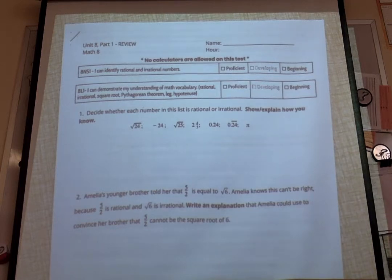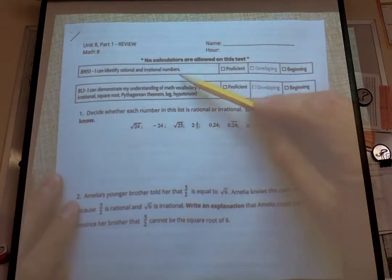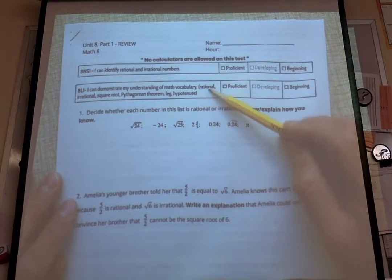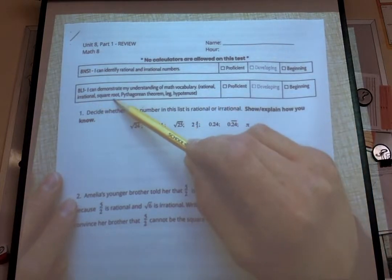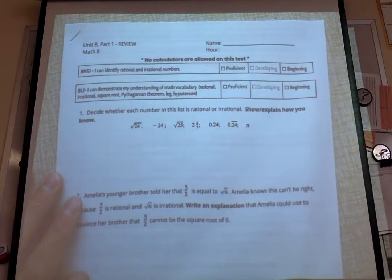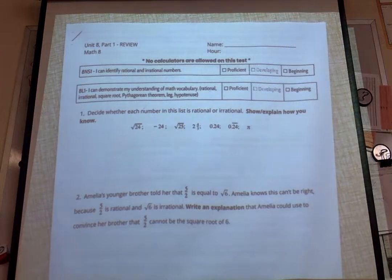Today we're going to be doing a talkover of the unit 8 part 1 review. Number 1, our learning target for the first section is I can identify rational and irrational numbers. The second part: I can demonstrate my understanding of math vocabulary. The words are rational, irrational, square root, Pythagorean theorem, leg, and hypotenuse — those are the vocabulary words we'd like to use throughout the review and on your assessment.